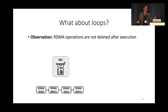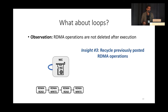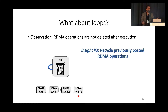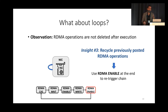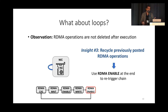Now the question is how we can implement loops, which is requirement R3 for Turing completeness. One observation we've made is that RDMA operations are not deleted after execution — they remain in memory inside the work queues, never deleted by the NIC. This presents an interesting opportunity: we can recycle previously posted RDMA operations. We found that we can use another proprietary verb called RDMA enable that instructs the NIC to refetch and re-trigger the entire chain. Once RDMA enable is executed, the NIC will re-execute all operations, allowing us to invoke the posted code as many times as necessary. This gives us a way to implement requirement R3 for loops.